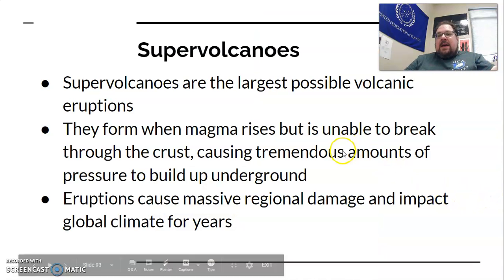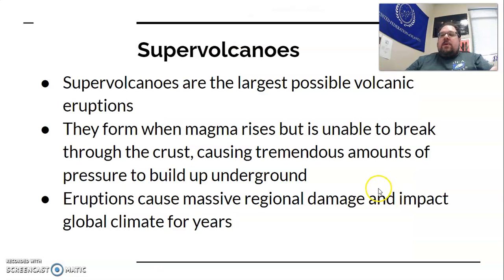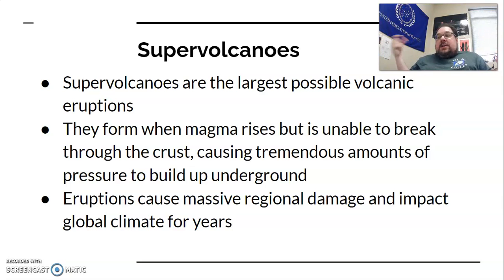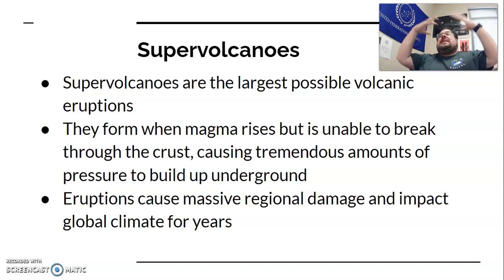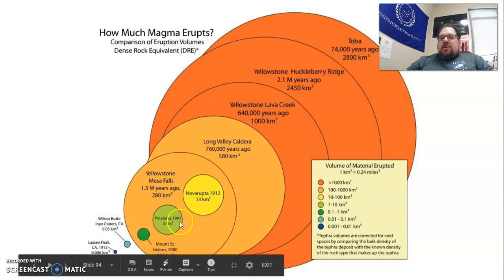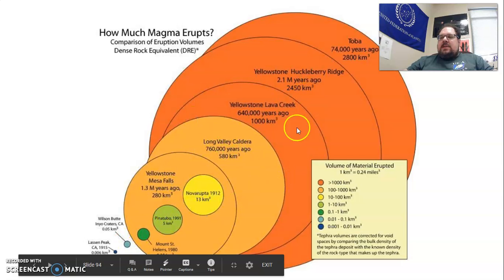Supervolcanoes are the largest possible volcanic eruptions. They occur when magma rises but can't break through, forming massive underground magma fields. Instead of pressure pushing up a structure to make a mountain, it stays in a massive underground caldera until the pressure gets so high the ground can't hold it back, resulting in a massive, earth-changing explosion. Examples include Yellowstone and Toba. Normal volcanoes are small by comparison.